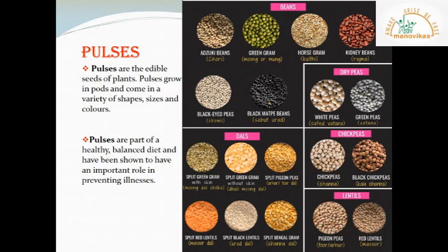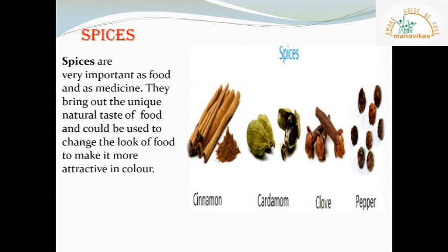Pulses are also edible seeds of plants. Pulses grow in pods and come in a variety of shapes, sizes and colors. Examples of pulses are beans, dry peas, chickpeas, dals and lentils. Some pulses may be part of your meals every day. Pulses are part of a healthy balanced diet and have been shown to have an important role in preventing illnesses. Pulses give us proteins that also help us to grow.